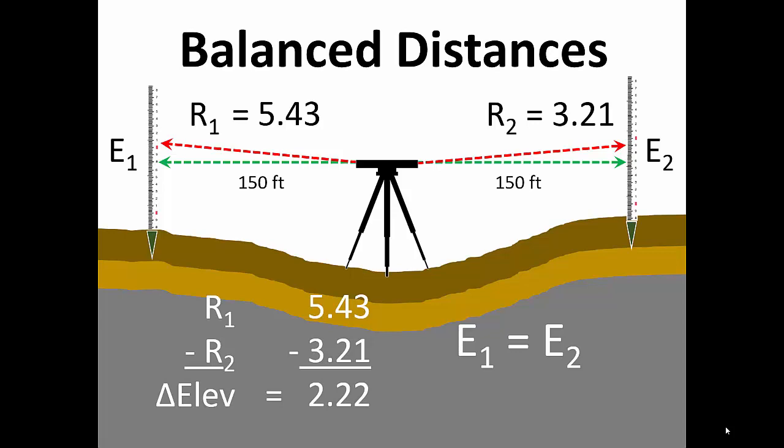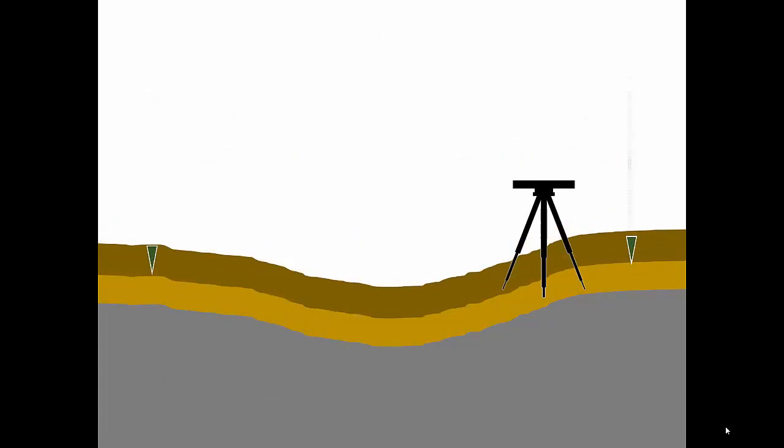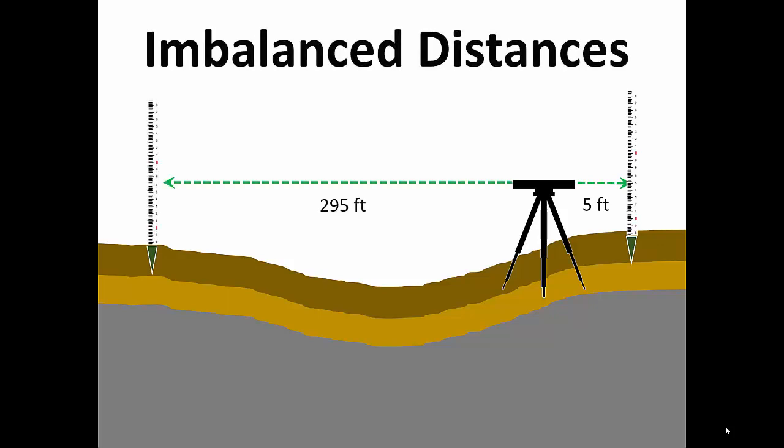Next, we'll move the instrument to within five feet of one of the rods, making our sight distances highly imbalanced. Here, we'll take readings R3 and R4, and once again the slope in the line of sight is identical for both readings. But now notice that error 3 and error 4 are now very different due to the imbalanced distances.